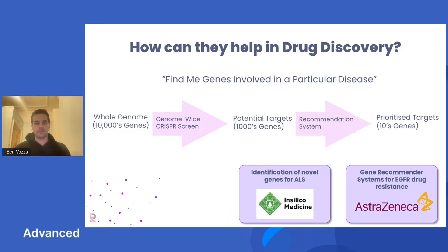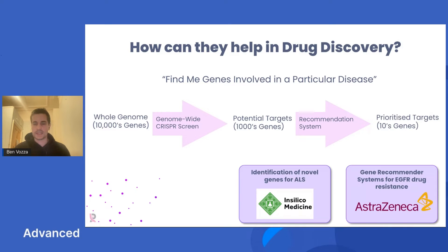Recommendation systems have already seen great success in drug discovery. Examples include Silicon Medicine, who recently published in Frontiers a great paper on the identification of novel genes for ALS, and AstraZeneca's gene recommendation systems for EGFR drug resistance.